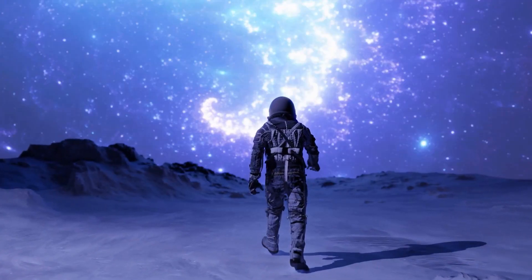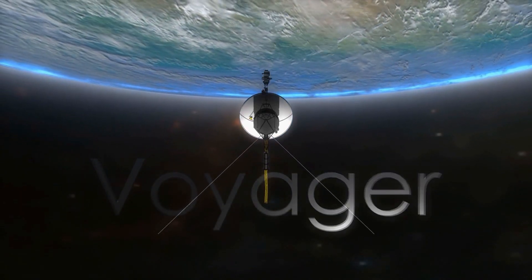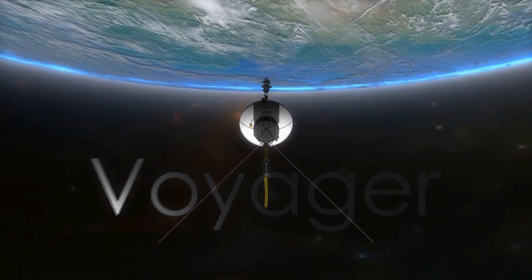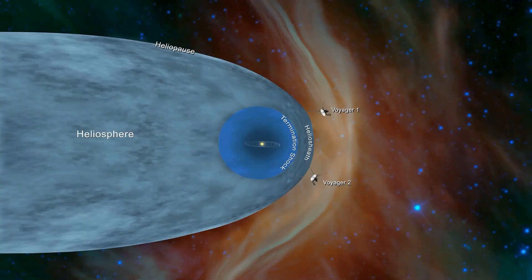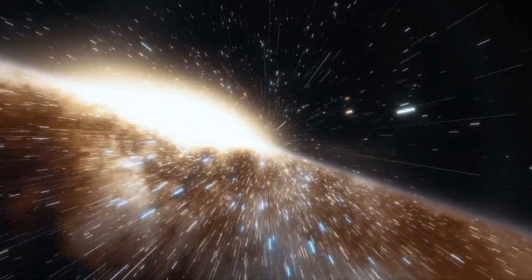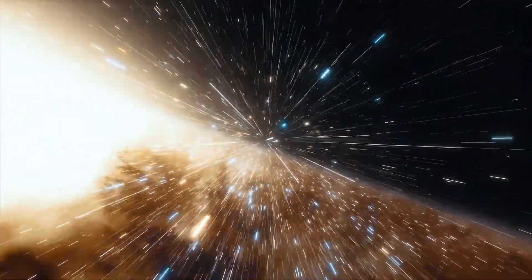A bold statement of humanity's curiosity and hope. Fast forward to August 25, 2012. Voyager 1 made history by crossing the heliopause, the boundary where the solar wind collides with the interstellar medium. For the first time, humanity reached interstellar space.